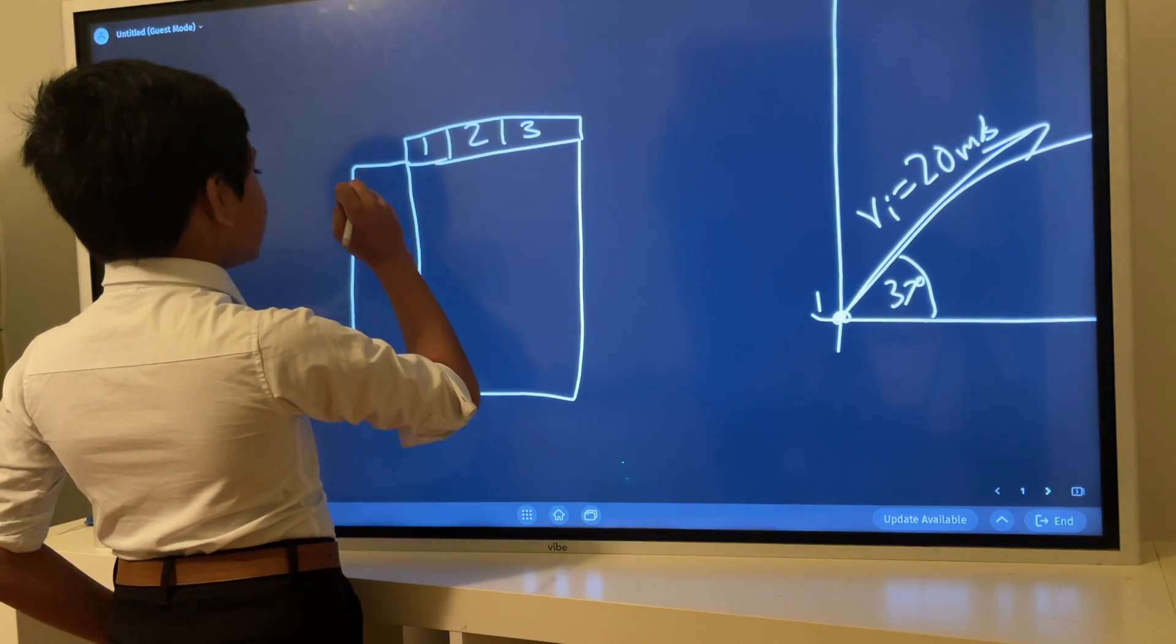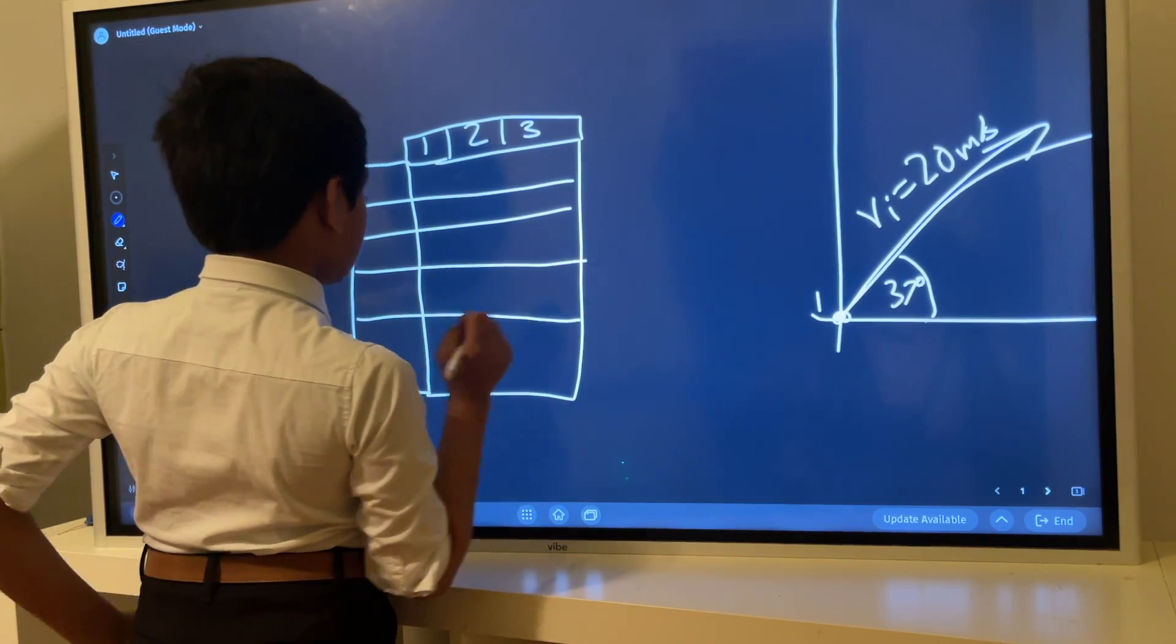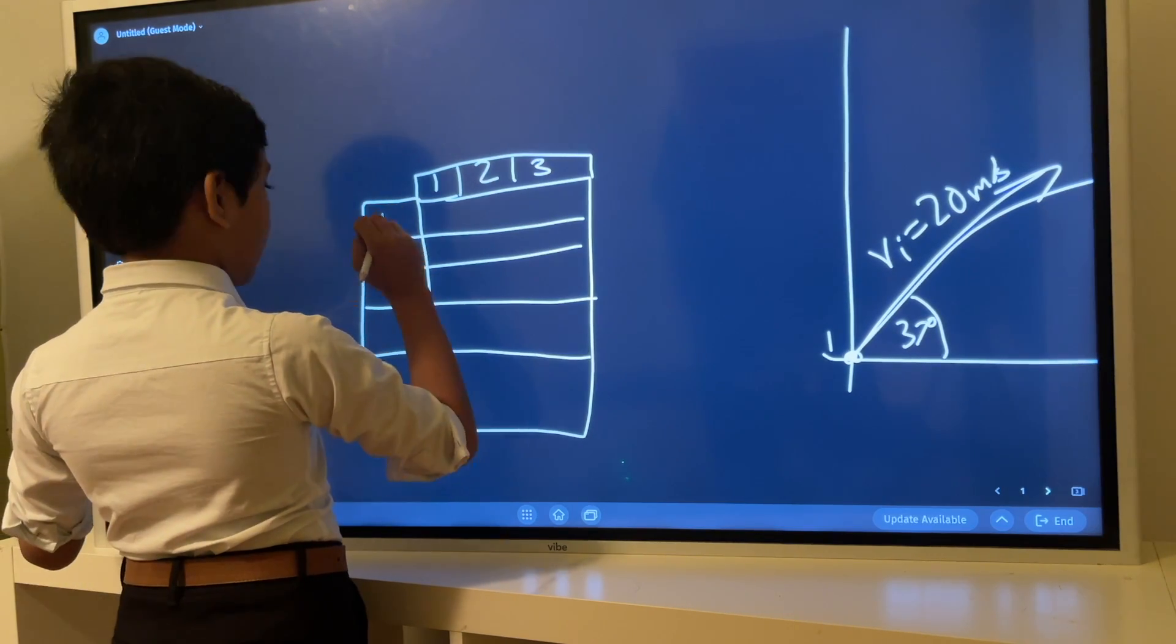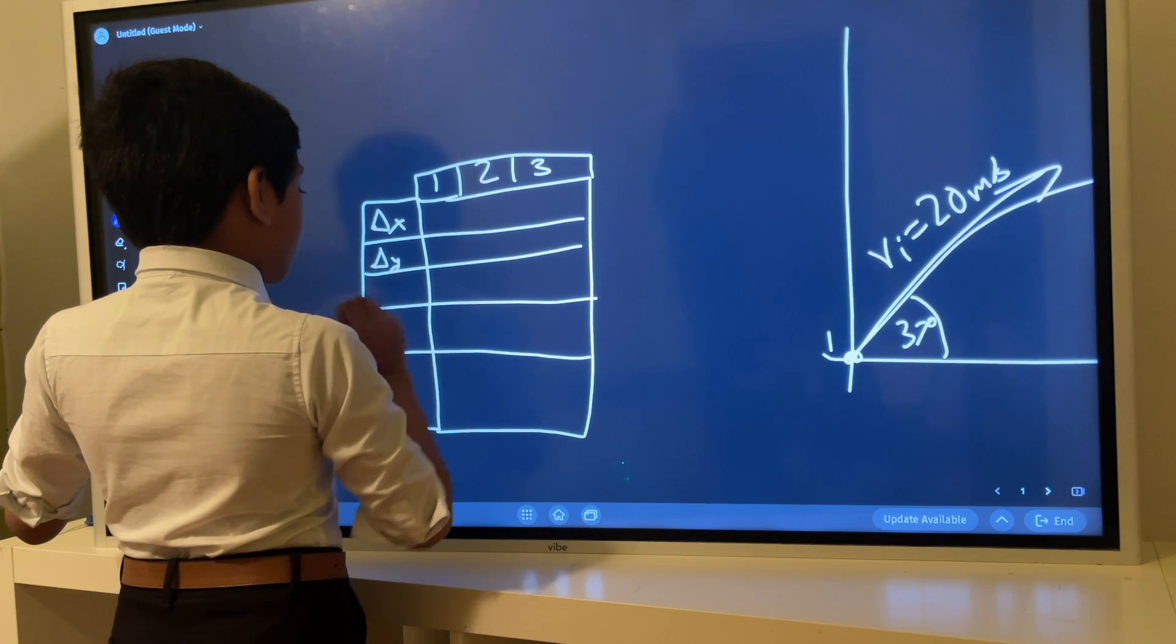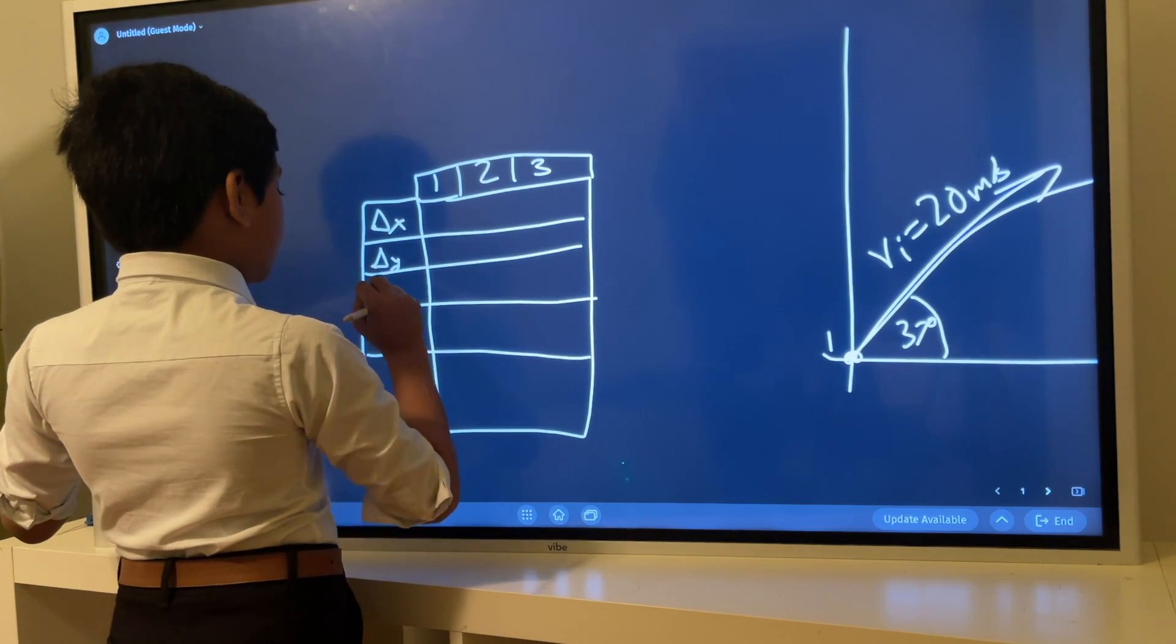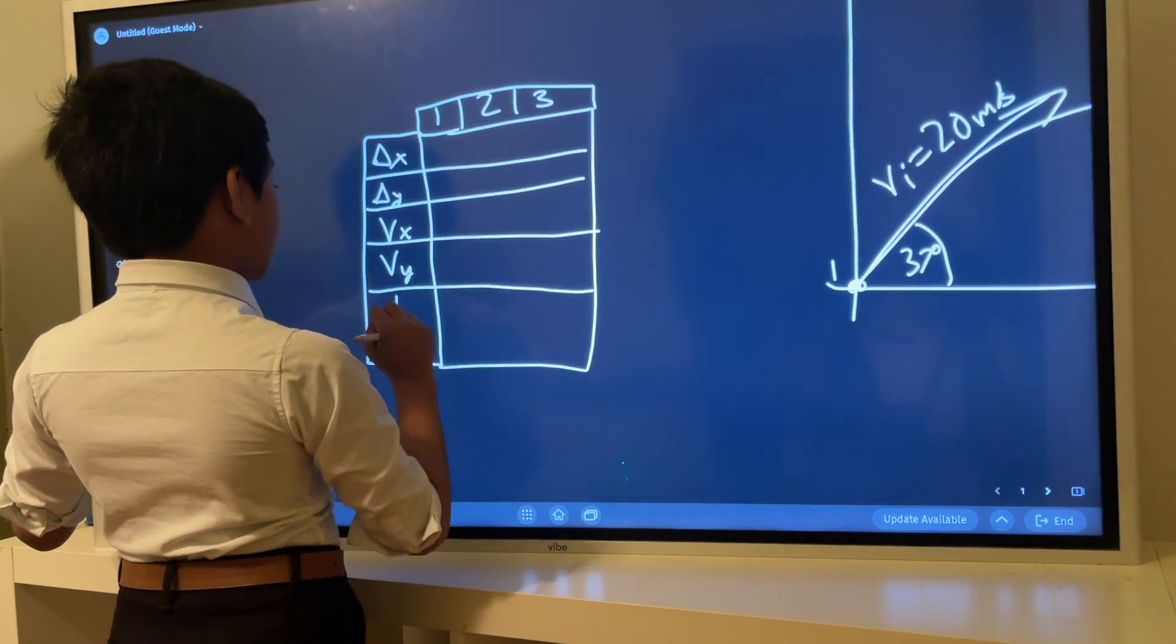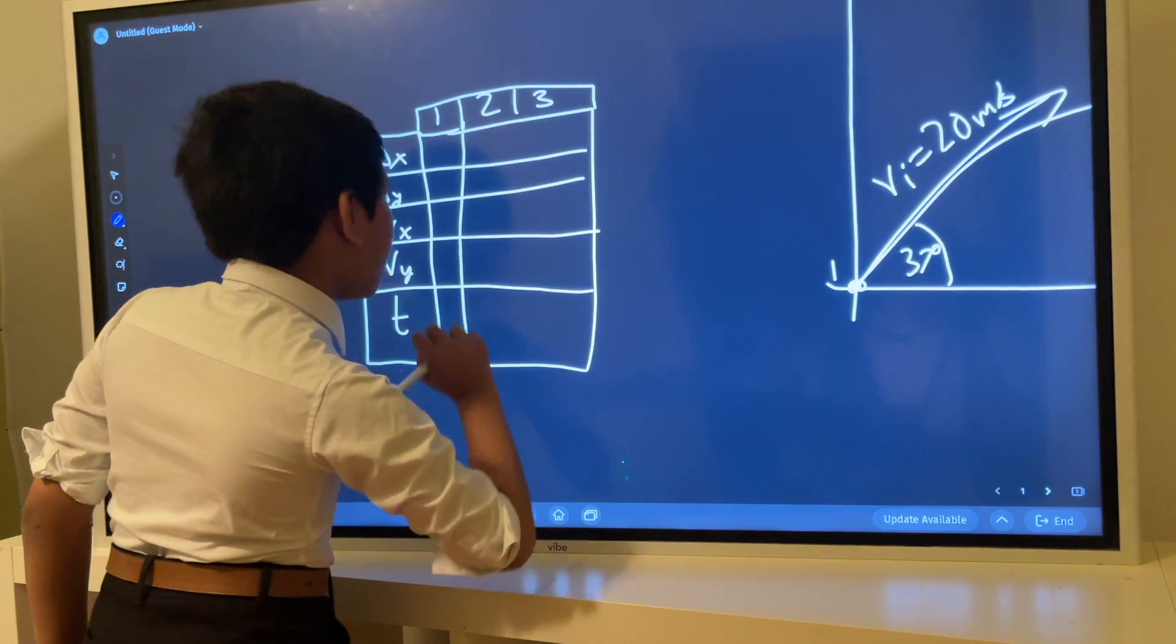We will get into some interesting geometry as well. We will be finding the displacement in the x, displacement in the y, we also need v_x, v_y, and finally t. Let's draw these columns.